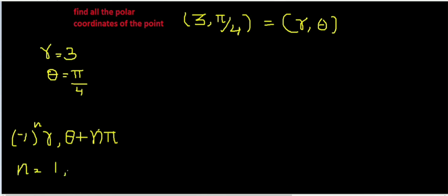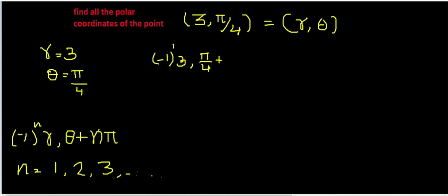Here we have n taking values 1, 2, 3, etc. We are going to go on. We have n equal to 1. By the equation, that is (−1)^1 into 3, giving us 5π/4 plus 1·π.